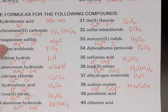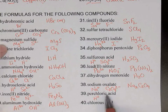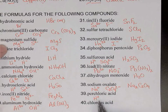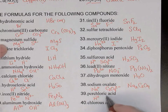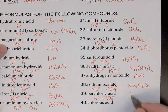Perchloric acid: there's no hydro, so this is not a binary acid — it must have hydrogen bonded to a complex ion. Since the acid name ends in -ic, the ion's name must have ended in -ate. So this was the perchlorate ion, ClO4-. Plus one, minus one: HClO4.